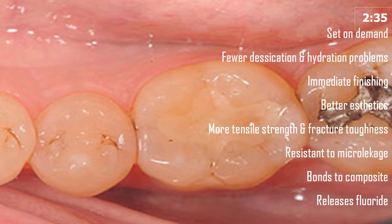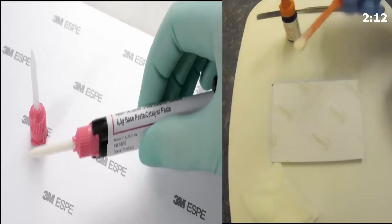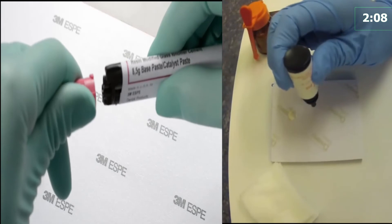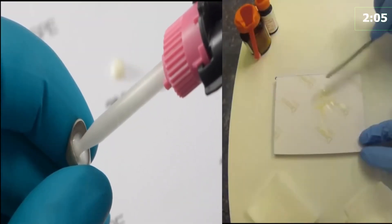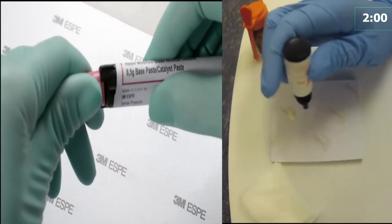RMGIC can be finished and polished immediately. It has better aesthetics compared to GIC, is more resistant to micro leakage, bonds better to composite, and also releases fluoride. A variety of products are available in the market — as a powder and liquid, or in an auto-mix package. The advantage is that in case of restoration it can be directly injected inside the cavity prepared, or in case of crown cementation it can be directly injected inside the crown.